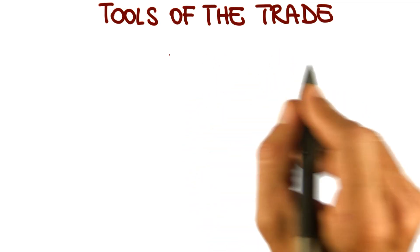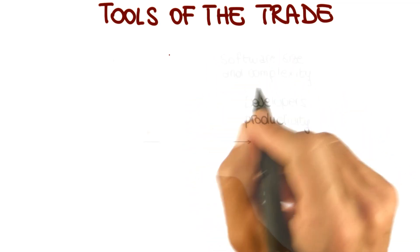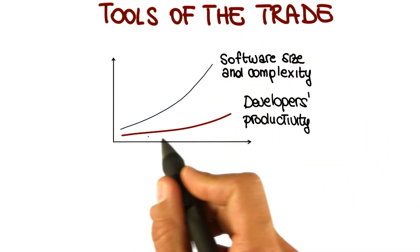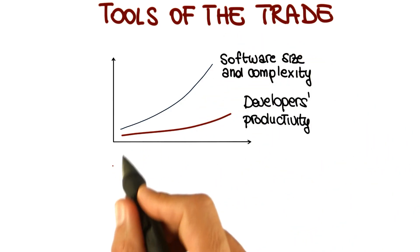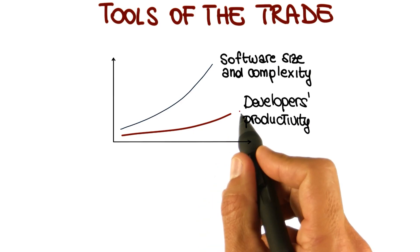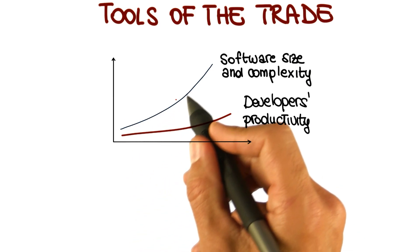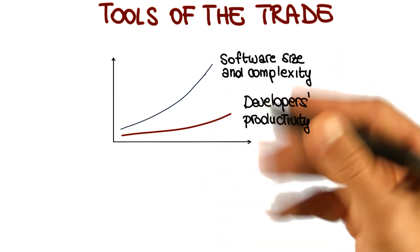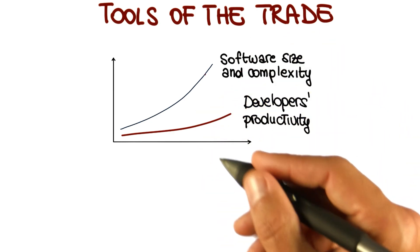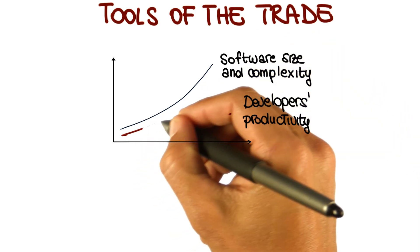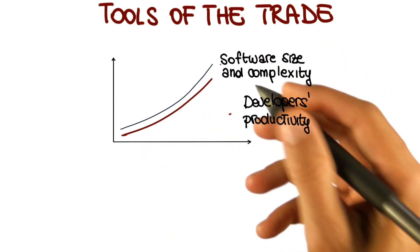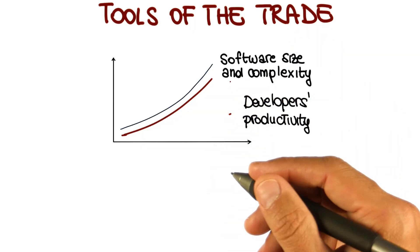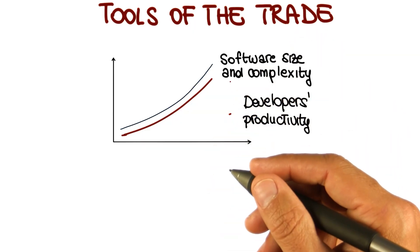Let me go back to one of the diagrams I showed you before. We had this qualitative diagram showing that one of the issues that led to the software crisis was the fact that developer productivity was not able to keep up with the software size and complexity, with the growth in the importance and complexity of software. What tools can help us do is change this and basically move this curve up so that it gets closer to what we need to develop the software we need to build.